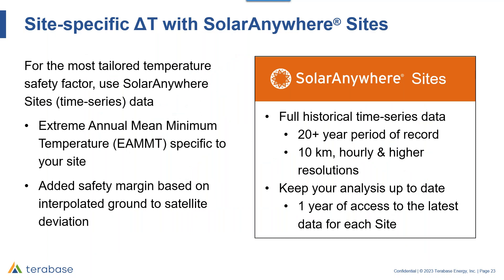We can generate site-specific delta T with SolarAnywhere. SolarAnywhere is a full historical time series dataset with 20-plus years of record at 10-kilometer hourly resolution, and in some areas — like North America — we can go down to 5 minutes at 1-kilometer resolution. This SolarAnywhere data, which is constantly being updated, can keep your analysis current. We'll give you one year of access to the latest data for each site with our promotion described later today.